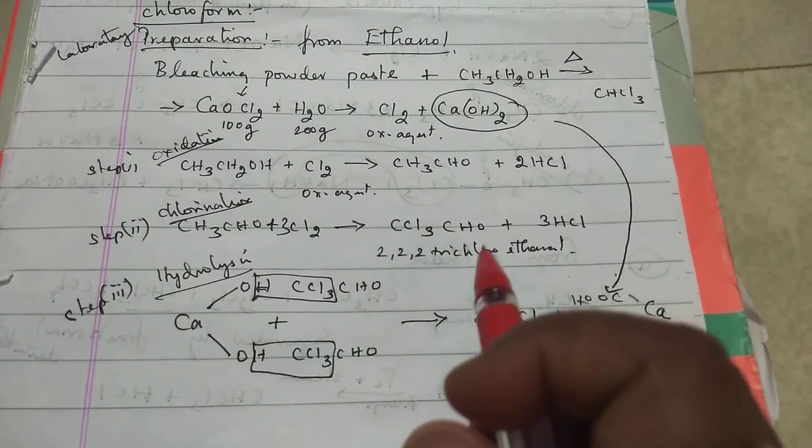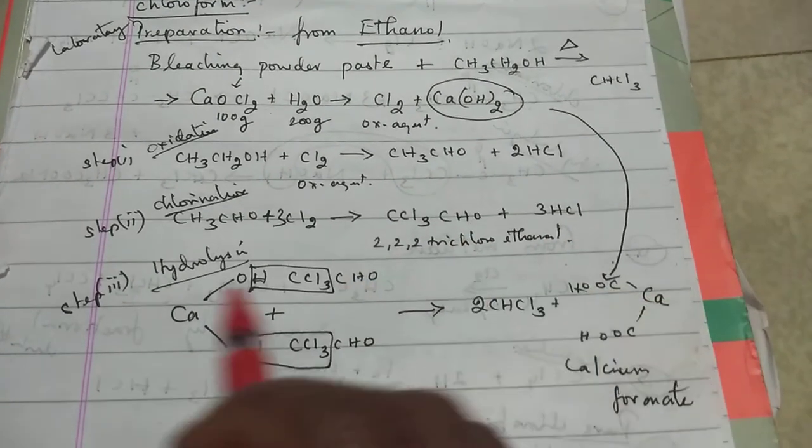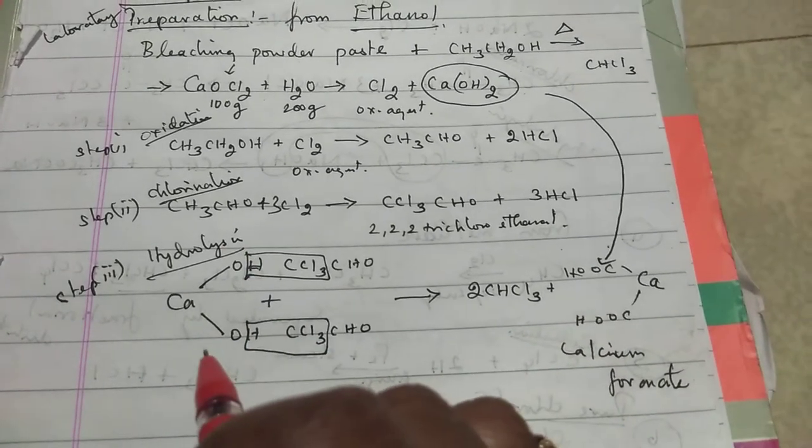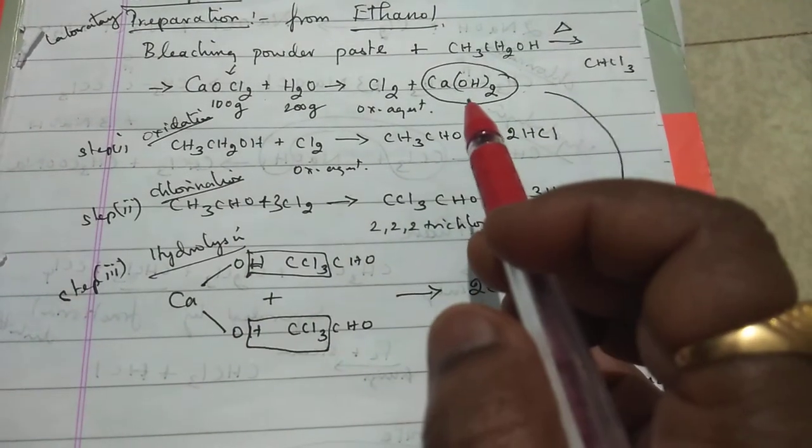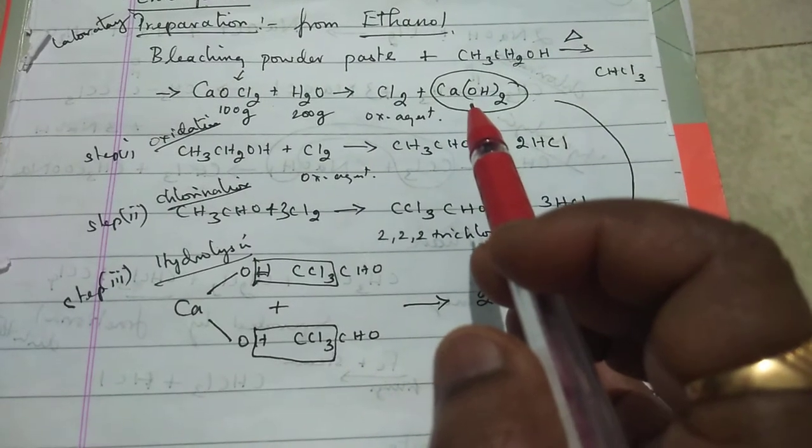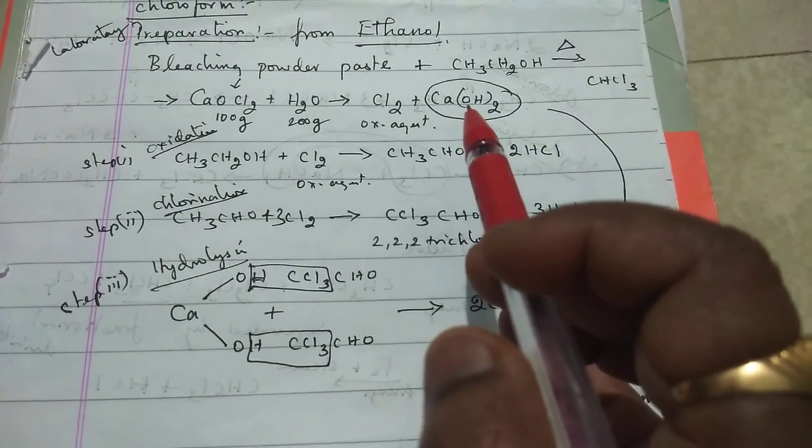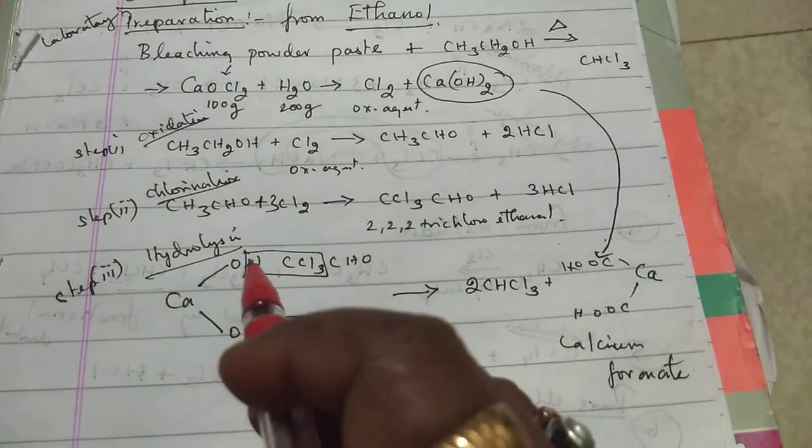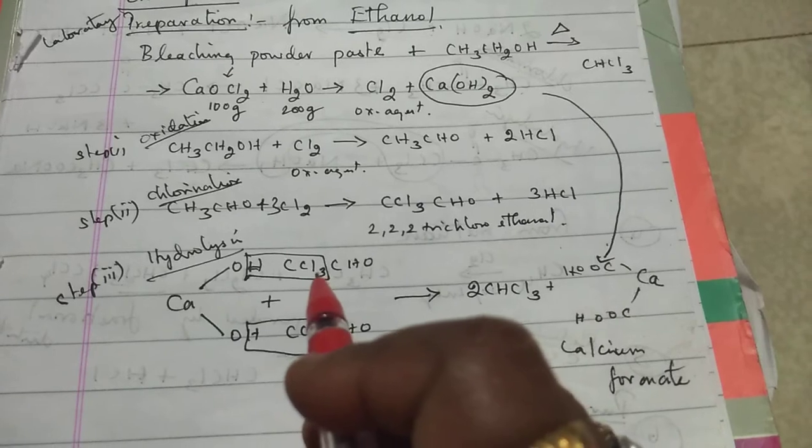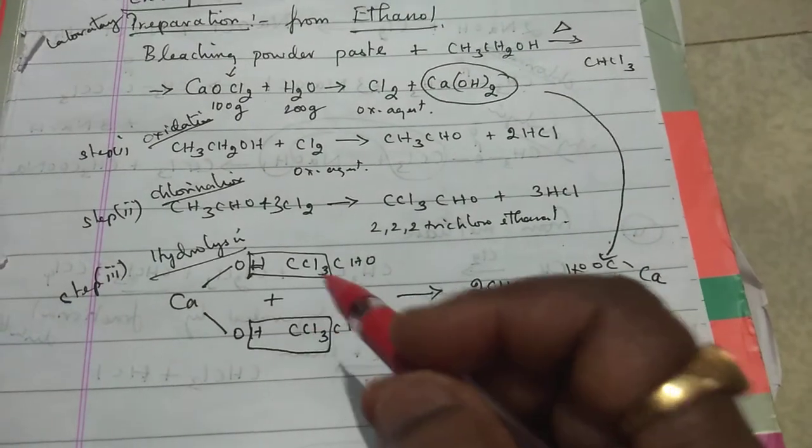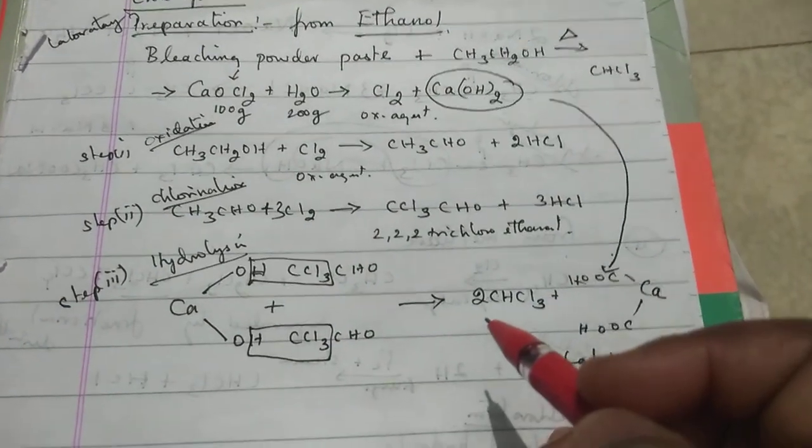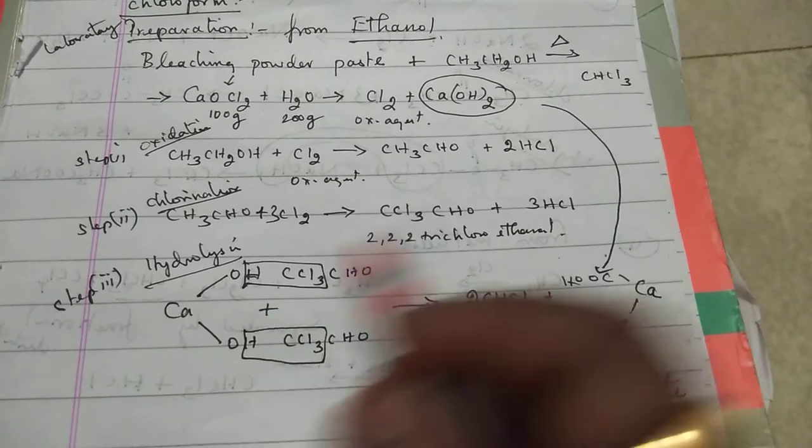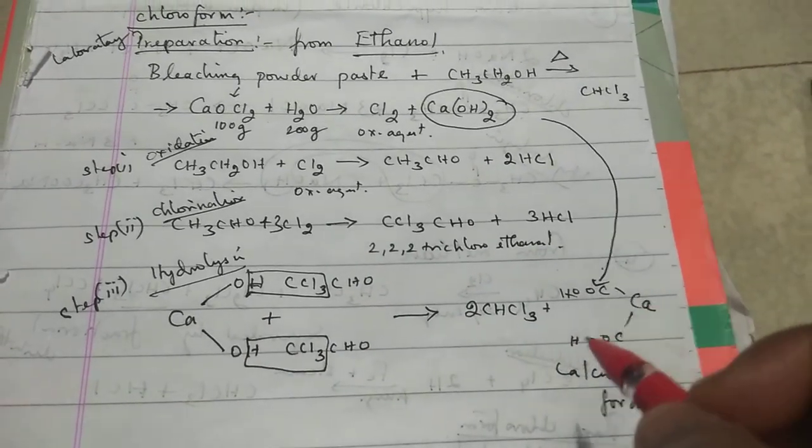This 2,2,2-trichloroethanol on hydrolysis, using calcium hydroxide from the bleaching powder paste, leads to CHCl3. Two moles of chloroform are obtained on hydrolysis of trichloroethanol, and the byproduct is calcium formate.